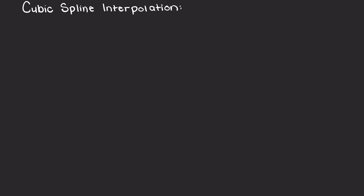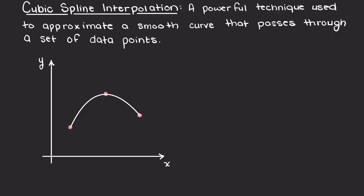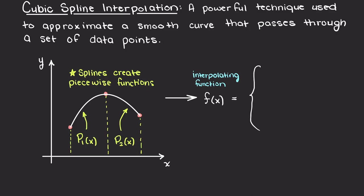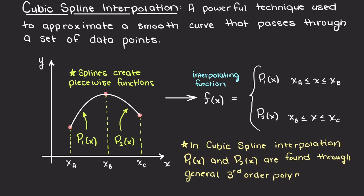In this video we are going to be talking about cubic spline interpolation theory. We will give a brief overview of spline interpolation, define what cubic spline interpolation is, speak about why it is used, and walk through how to implement it. Cubic spline interpolation is a powerful technique used to approximate a smooth curve that passes through a set of data points. Similar to linear and quadratic splines, it breaks down the data range into smaller segments. However, we now fit a cubic polynomial to each section, and this ensures continuity and smoothness at the connection points — something we were lacking in both linear and quadratic splines.